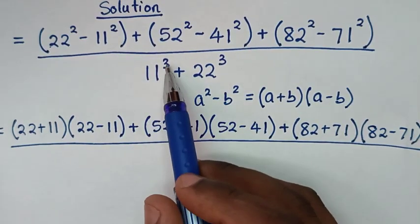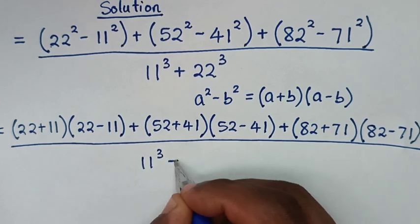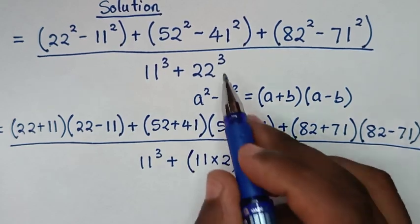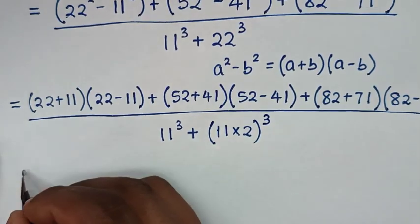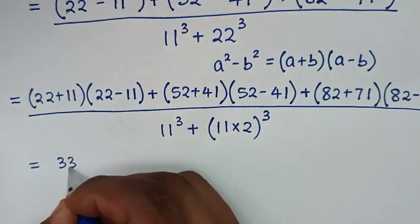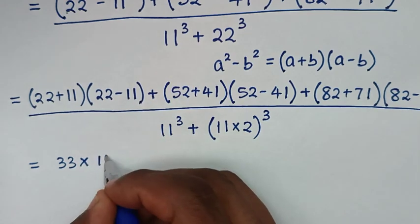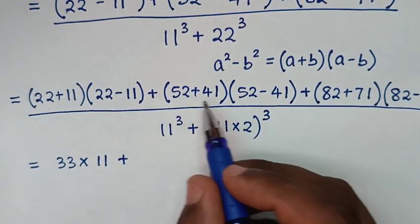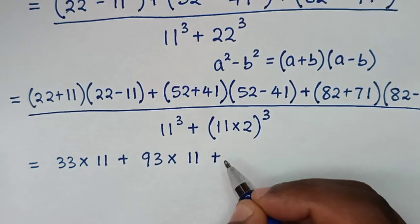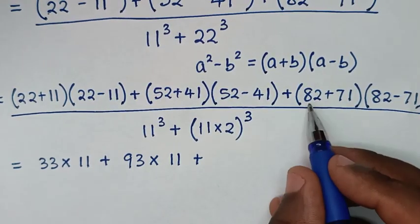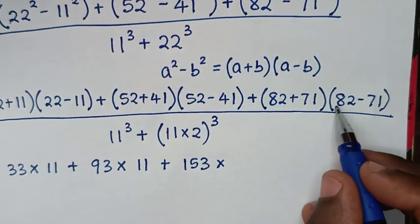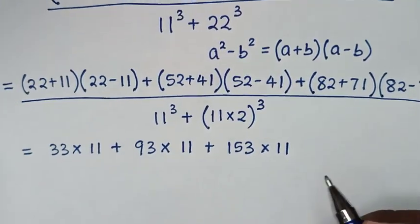From the denominator, we will make 11 power 3 common, so it will be 11 power 3 plus 22 power 3 — and 22 is the same as 11 times 2, then bracket to the power of 3. In the numerator: 22 plus 11 is 33, times 22 minus 11 which is 11; then plus 52 plus 41 which is 93, times 52 minus 41 which is 11; then plus 82 plus 71 which is 153, times 82 minus 71 which is 11.